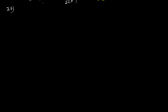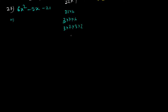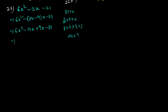Question 27: 6x² minus 5x minus 21. We need 21 times 6 = 126. Trying factors: 14 times 9 gives 126, and 14 minus 9 is 5. So: 6x² minus 14x plus 9x minus 21. Taking 2x common gives (3x minus 7), and taking 3 common gives (3x minus 7). The answer is (3x minus 7)(2x plus 3).